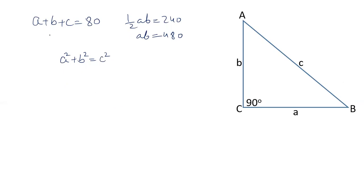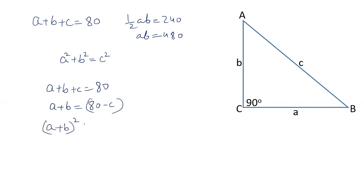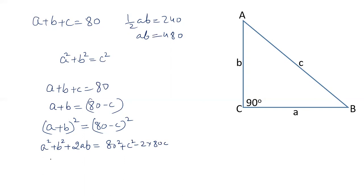Now, from a plus b plus c equals 80, we get a plus b equals 80 minus c. Squaring both sides: a plus b whole square equals 80 minus c whole square. Expanding the left side: a squared plus b squared plus 2ab. And the right side: 80 squared plus c squared minus 2 times 80 times c. Now, since a squared plus b squared equals c squared, we substitute c squared on the left side.